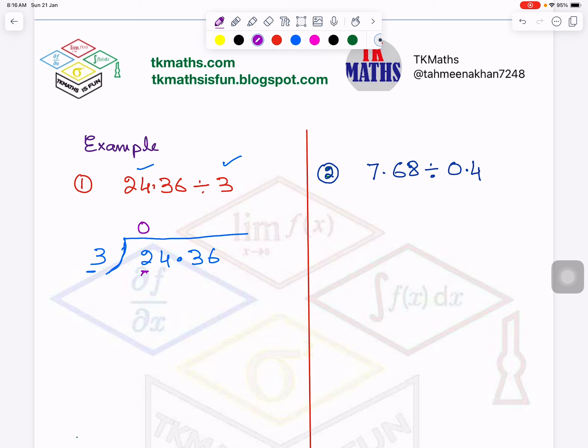3 times 0 is 0. And then I subtract 2. And 4 will come down. Now it is 24. In the table of 3, when 24 come? 8. So 8, 3 times 8 is 24. When you will subtract, it will be 0. Now you have to bring 3 down. You have to bring 3 down here.